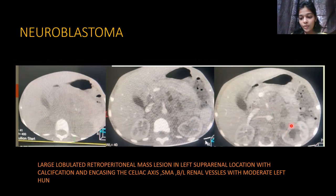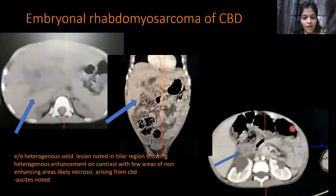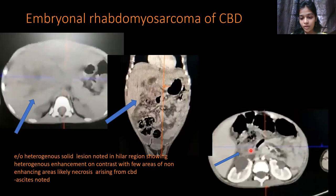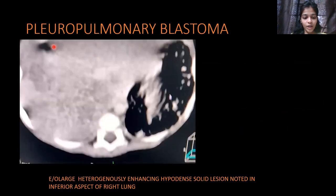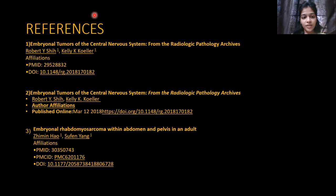A heterogeneously hypodense solid lesion at the hepatic hilum shows heterogeneous enhancement with necrotic non-enhancing areas, and a dilated CBD with an enhancing solid component within it — this was the case initially thought to be TB due to suspected necrotic lymph nodes and ascites, confirmed as embryonal rhabdomyosarcoma. Finally, a large heterogeneously enhancing hypodense solid lesion in the inferior right lung turned out to be pleuropulmonary blastoma. These are my references. Thank you.